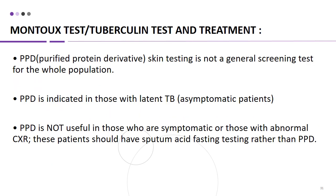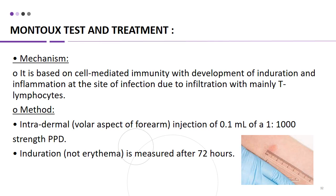Mantoux test, also known as the tuberculin test or purified protein derivative (PPD) skin test, is not a general screening test for the whole population. It is indicated in asymptomatic individuals with latent TB. PPD is not useful in symptomatic patients or those with abnormal chest X-ray — these patients should have sputum acid-fast testing. The test is based on cell-mediated immunity, with development of induration and inflammation at the injection site due to infiltration with mainly T lymphocytes. It involves intradermal injection of 0.1 ml of 1:2000 strength PPD on the volar aspect of the forearm. Induration — not erythema — is measured after 72 hours.